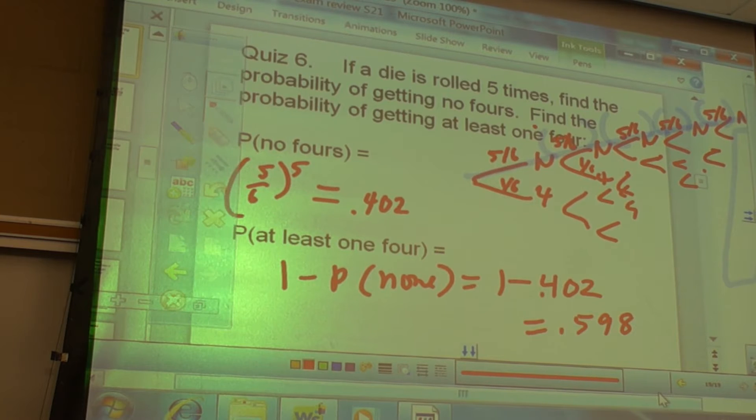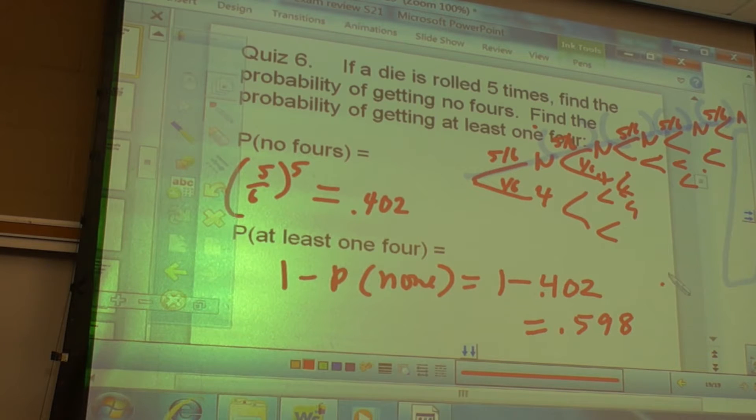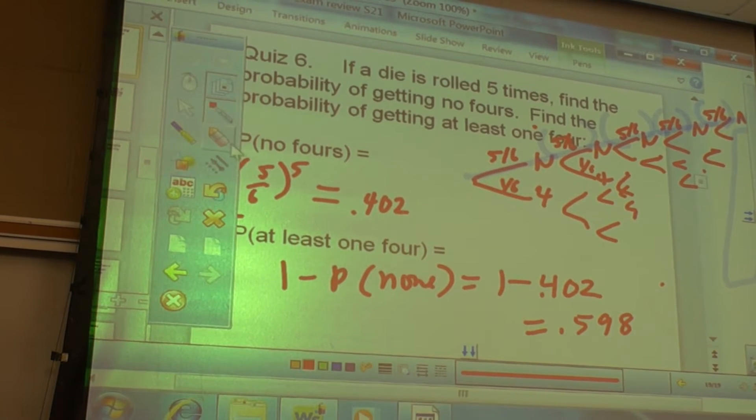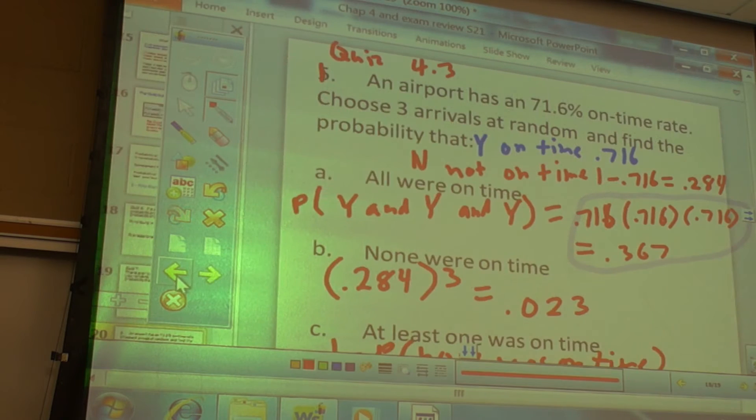All right. Are there questions? Anybody feeling alright with that part? Okay. So let me ask you if it was, the probability, well, yeah, we just did that. So, here, same thing. Right? A plane. .716.